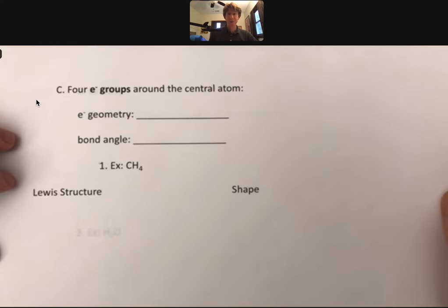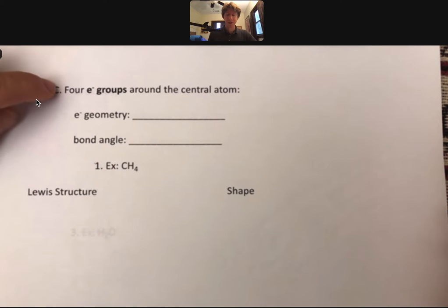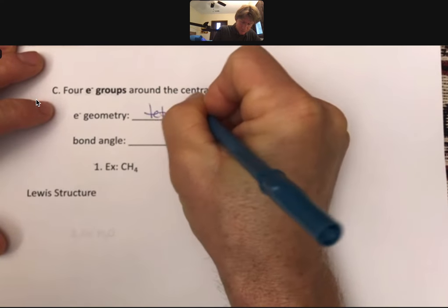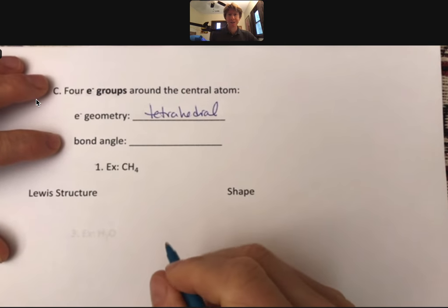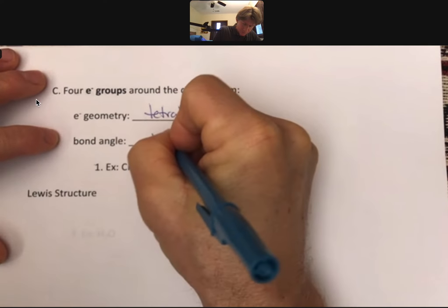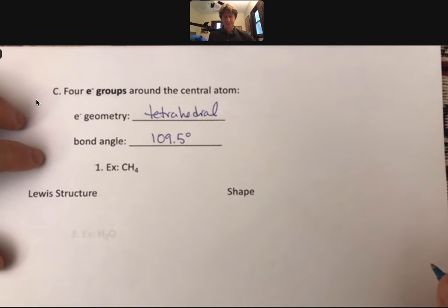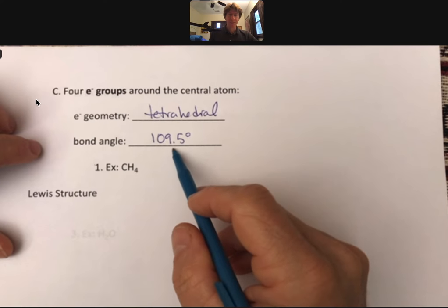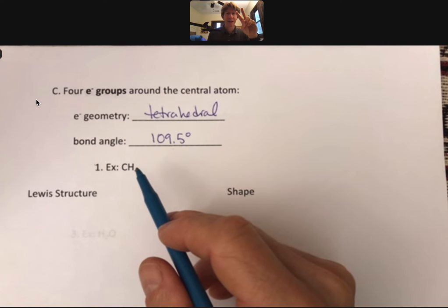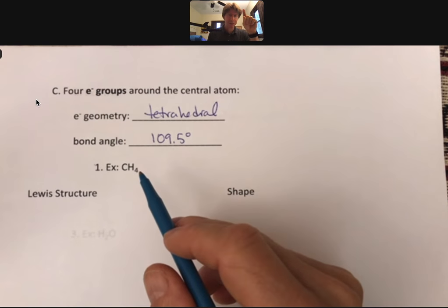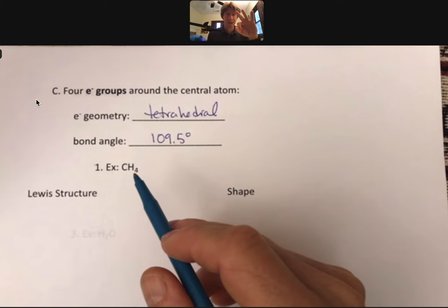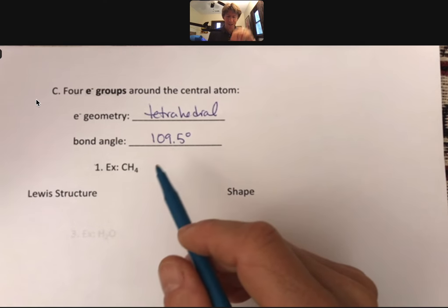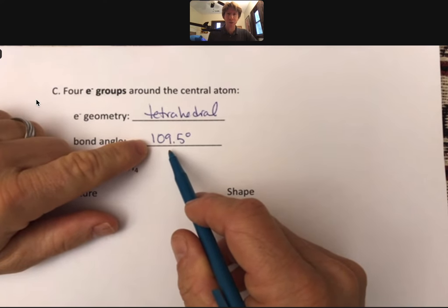Our last number of electron groups that we will deal with in this course is four electron groups. The electron geometry here is called tetrahedral, and the bond angle is 109.5 degrees. For those of you playing along at home, you know that with two electron groups and 360 degrees, we cut 360 divided by 2 and we got 180. For three electron groups, 360 divided by 3 was 120. And so 360 divided by 4 is 90, and this is a different number.